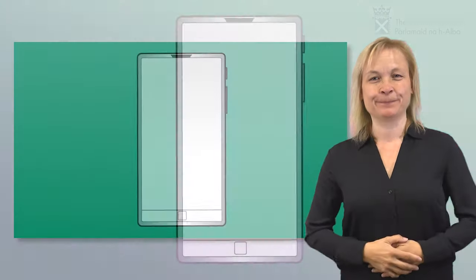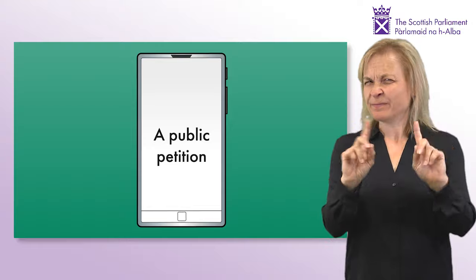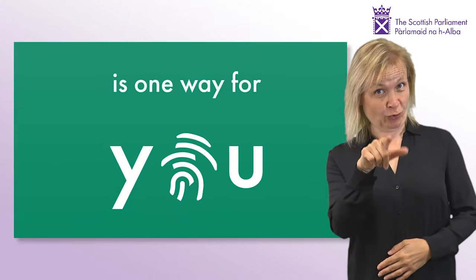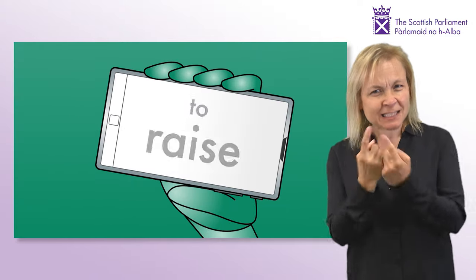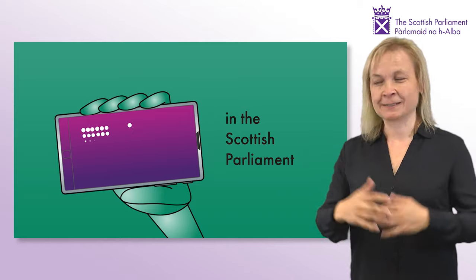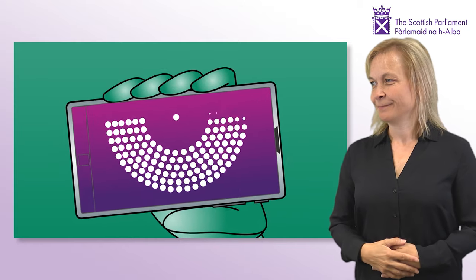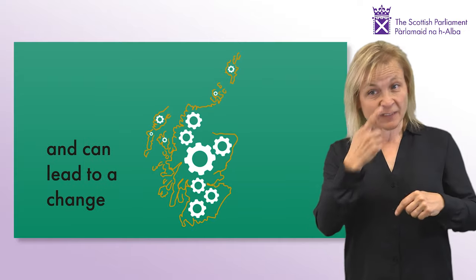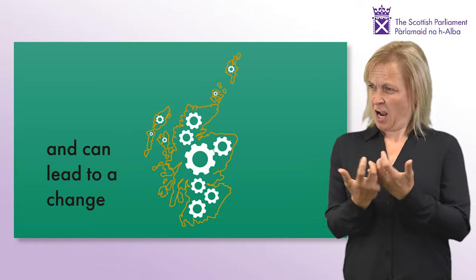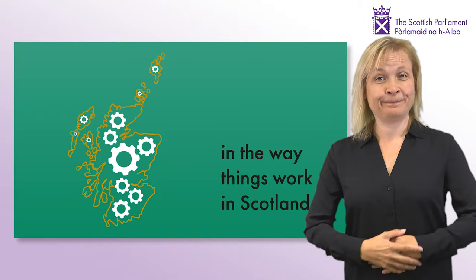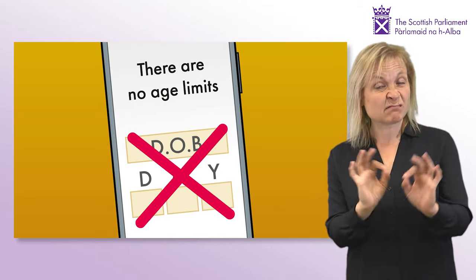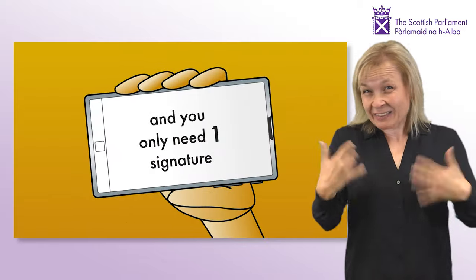Petitioning the Scottish Parliament. A public petition is one way for you to raise an issue in the Scottish Parliament and can lead to a change in the way things work in Scotland. There are no age limits and you only need one signature, your own.